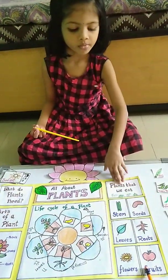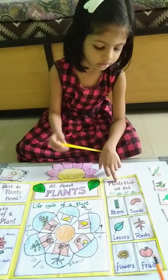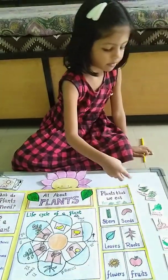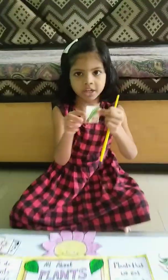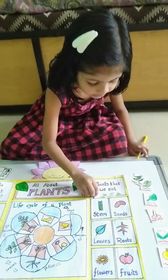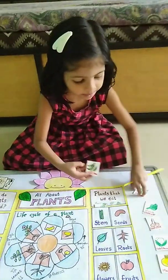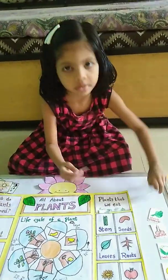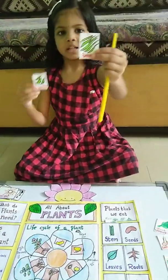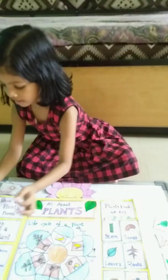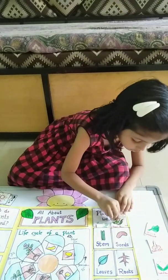So what do plants give us that we can eat? First is seeds, for example spring onion. Okay. Next is seeds, for example — please speak loudly — green peas and beans. Green peas.